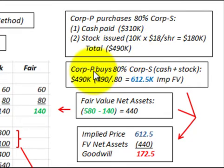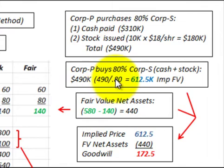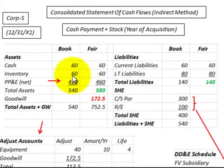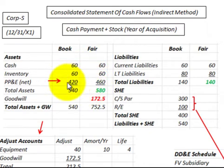With Corp P buying 80% for $490,000, we divide that $490,000 by 80%, and that gives us an implied fair value of Corporation S of $612,500. Looking at the balance sheet for Corporation S, we have to determine the fair value of our assets and liabilities. In this case, we only have one change in property, plant, and equipment.